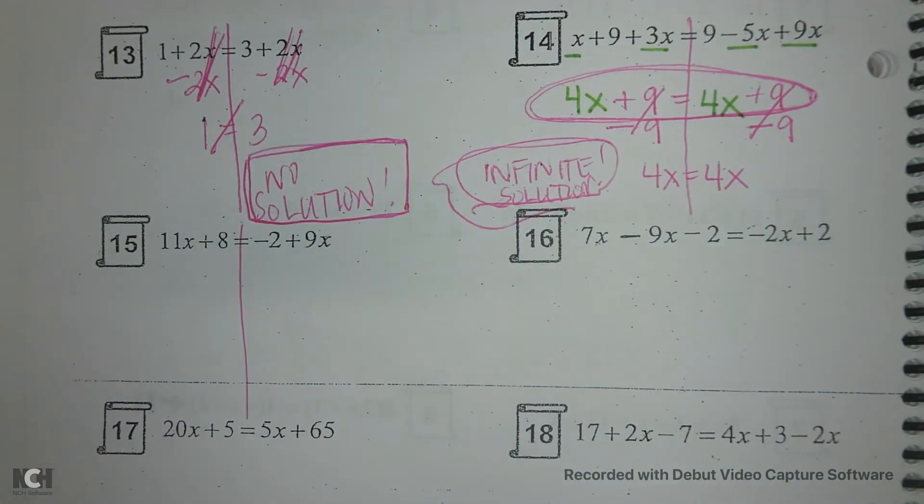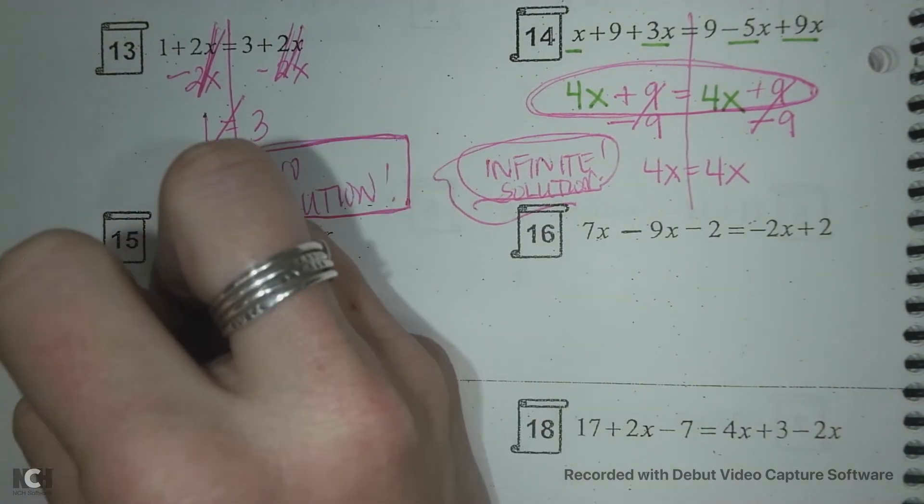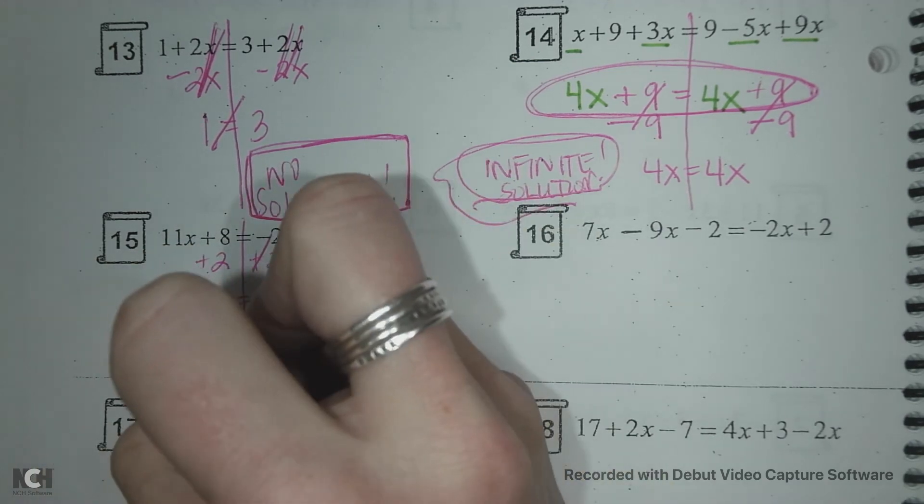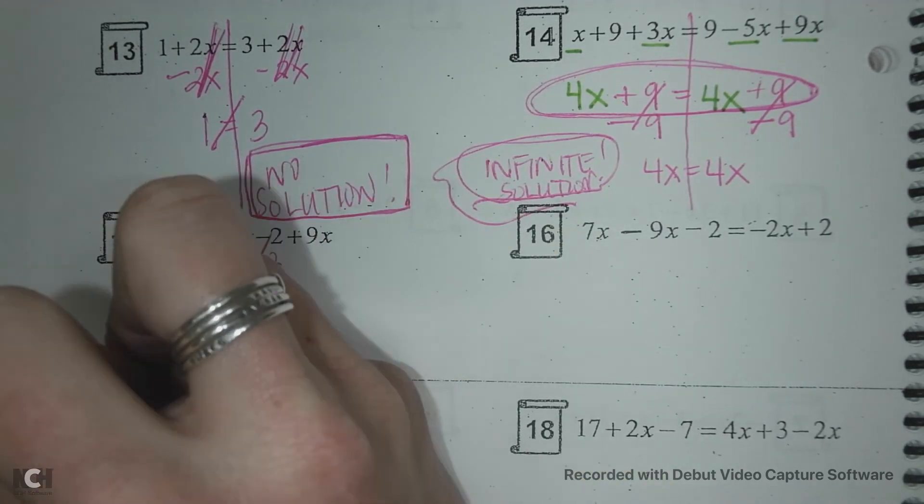Okay. Let's move our numbers first. So we're going to add 2 and add 2. 8 and 2 make 10. I still have my 9x and my 11x.